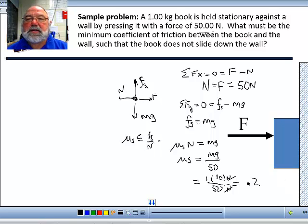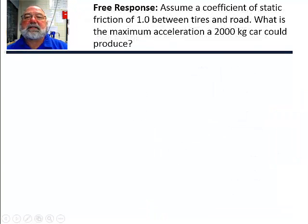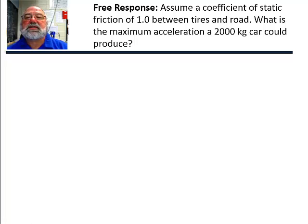Assume a coefficient of static friction of 1 between tires and road. What is the maximum acceleration a 2,000 kilogram car could produce?